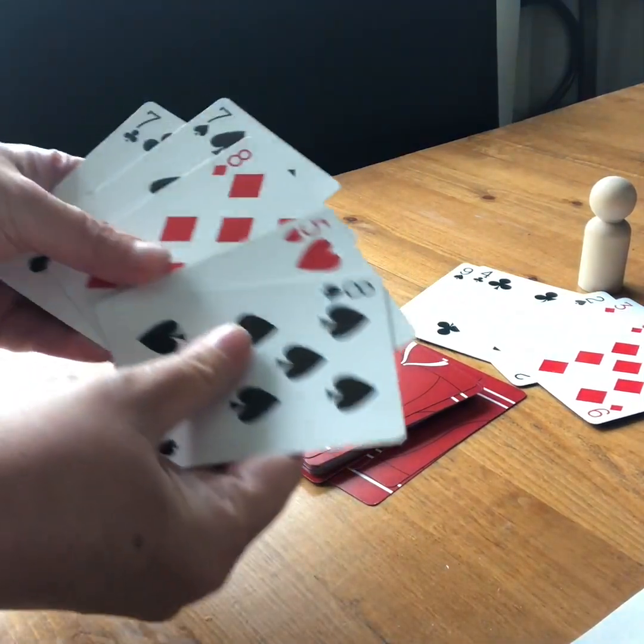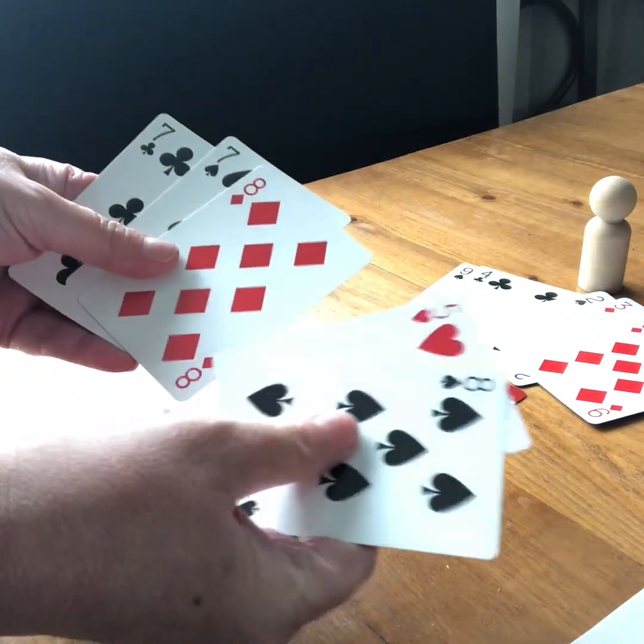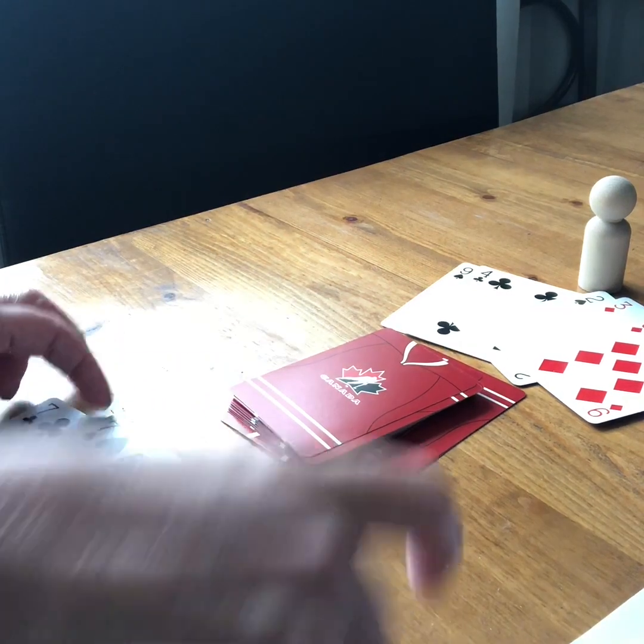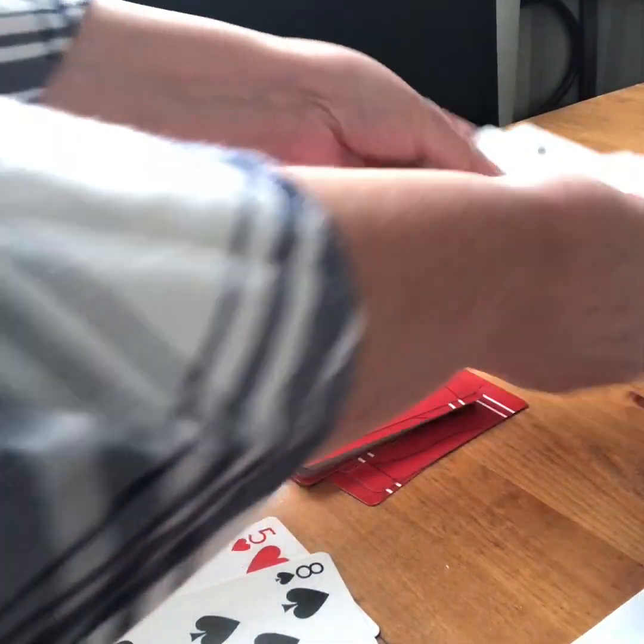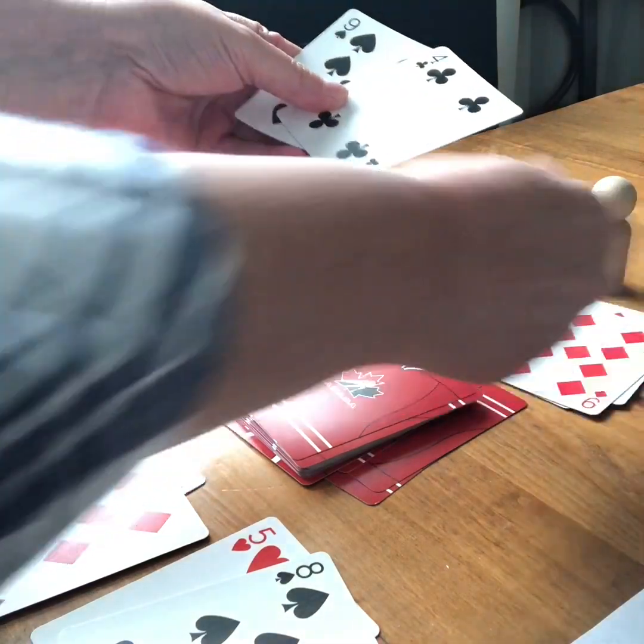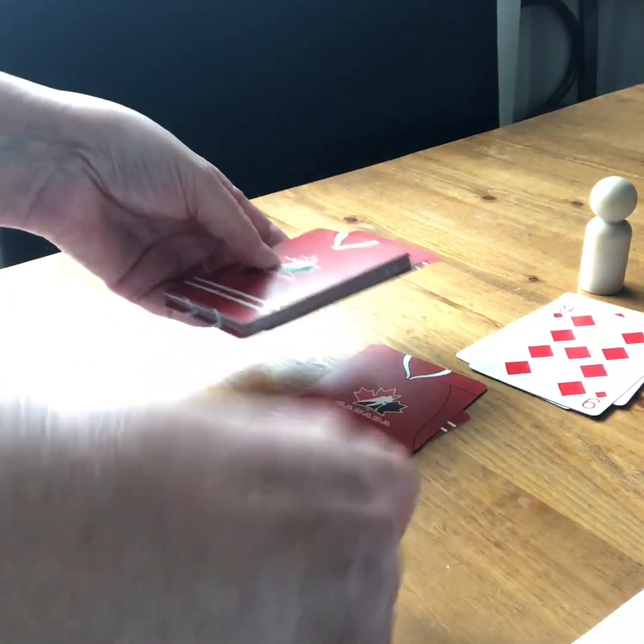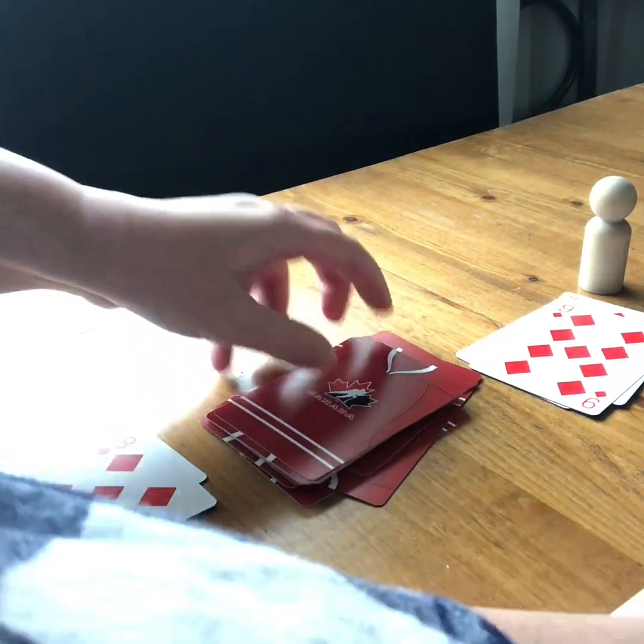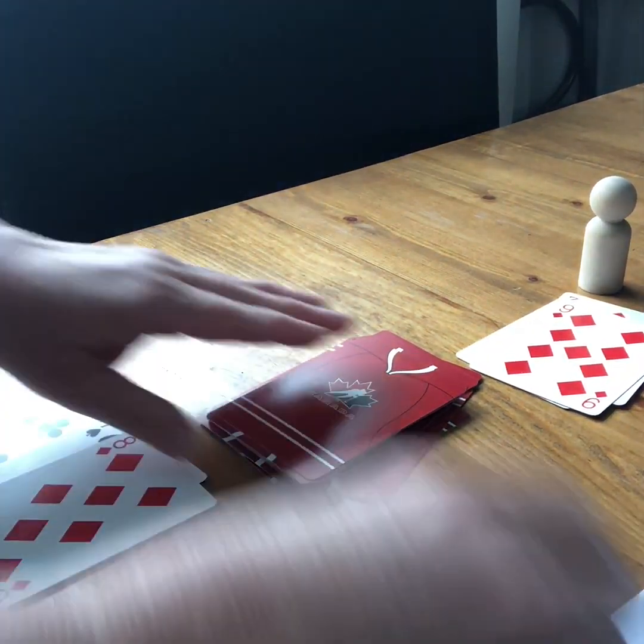So now this round, can I make 13? I see I can make it with an 8 and a 5. And my partner, can they make 13? They can, with the 9 and the 4. So again, we both score zero for this round because we were able to make 13.